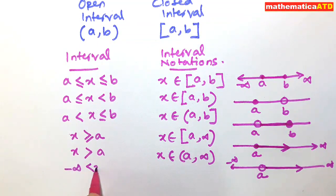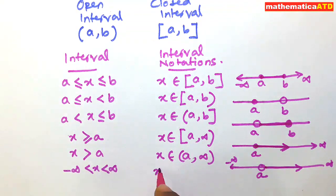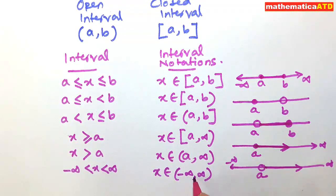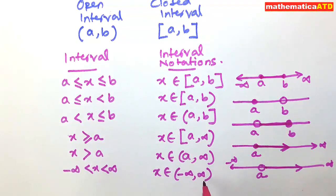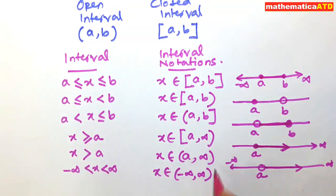If we have minus infinity < x < infinity, we represent it in interval notation as x belongs to the open interval (−∞, ∞). Minus infinity or positive infinity cannot be taken as a closed interval because infinity is going far, far away beyond imagination. Therefore, infinity and minus infinity can never be included in an interval — they should always appear with a round bracket, that is, in an open interval.